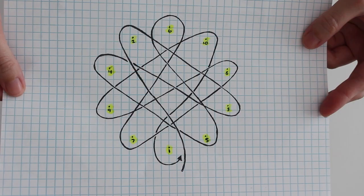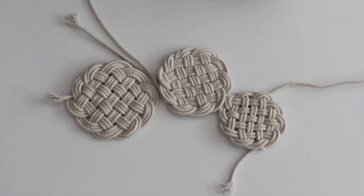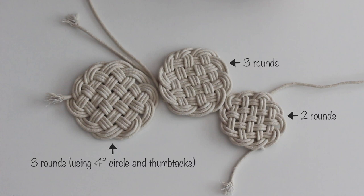I broke the knot down into steps, so hopefully this will make it easier to understand. I tried making a coaster with 2 rounds and it turned out to be too small. I made one with 3 rounds and it was still too small. Then I used a 4 inch circle with pins which got it to be the size that I wanted.